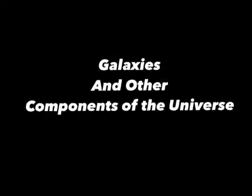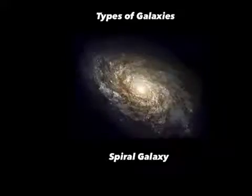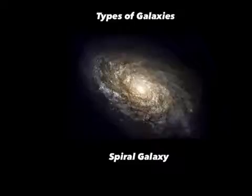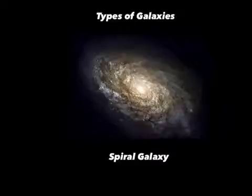Our lesson today is on galaxies and other components of the universe. Edwin Hubble is credited with being the first person to identify groups of stars as a galaxy. Hubble began studying an object in space that he called a fuzzy star. He discovered that the fuzzy star was not one singular object, but millions of dots of light. This group of stars became known as a galaxy.